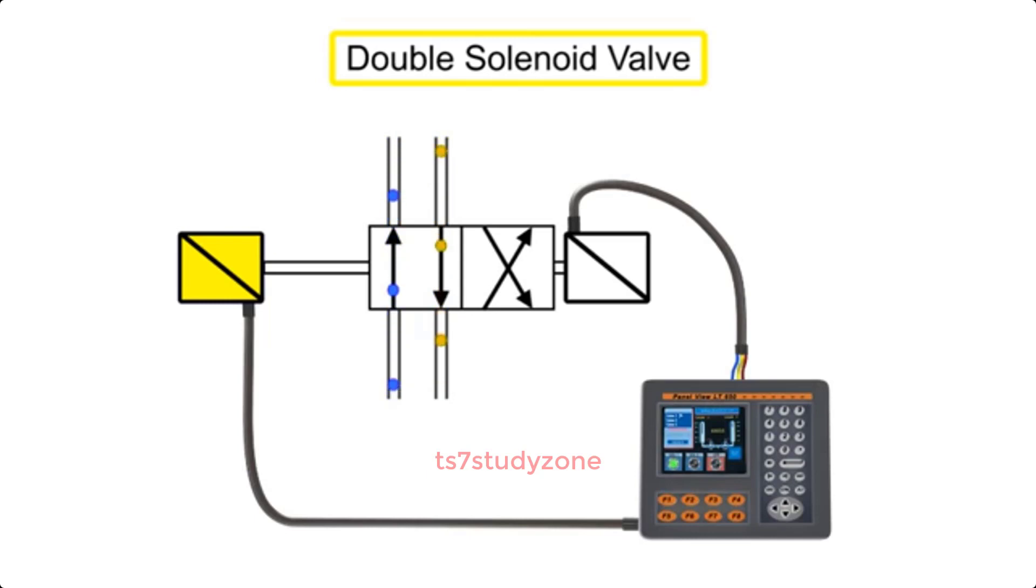Double solenoid valves have two solenoids, typically mounted on opposite ends of the valve body. This type of two-position double solenoid valve does not have a spring return.